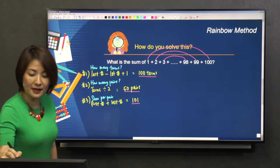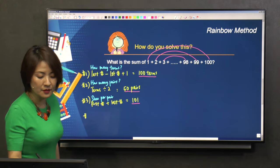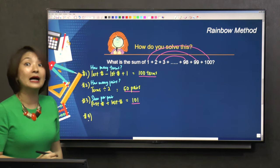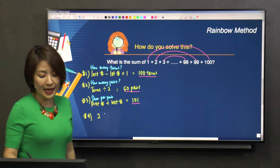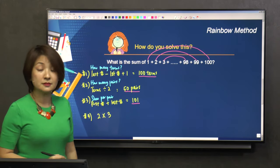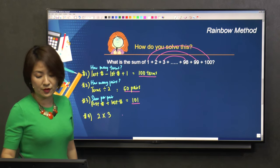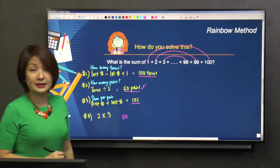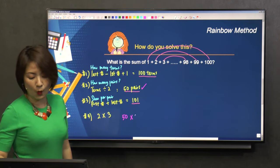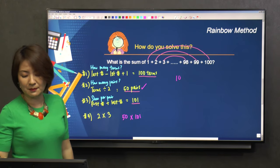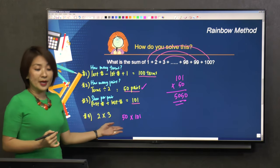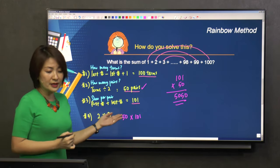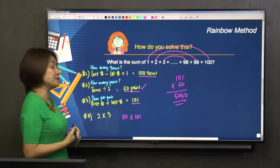And the last bit is actually very simple: the answer. The answer is take number 2 times number 3. The answer for number 2 is 50. The answer for number 3 is 101. Just multiply them. And that's what you get: 5,050.